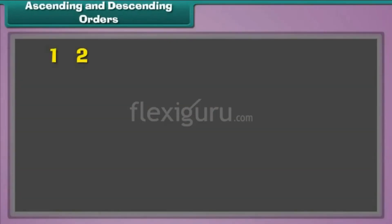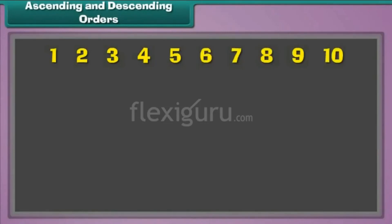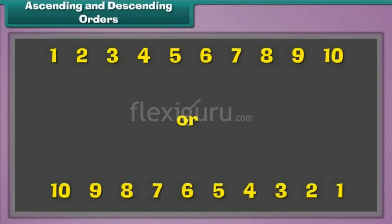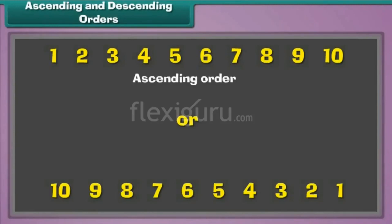1, 2, 3, 4, 5, 6, 7, 8, 9, 10. Or, 10, 9, 8, 7, 6, 5, 4, 3, 2, 1. Arrangement of numbers from the smallest to the largest is called ascending order.